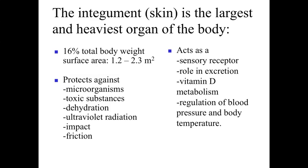The skin has a role in excretion — sweat glands associated with the skin are important for excreting materials as well as regulating body temperature. It's also important for vitamin D metabolism, related to the beneficial properties of sunlight. And finally, because the skin is so large and is the interface between the body and the surrounding world, it's important for the regulation of both blood pressure and body temperature.